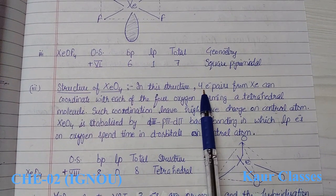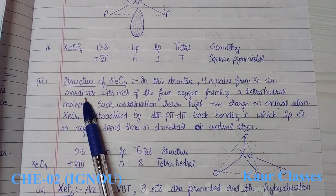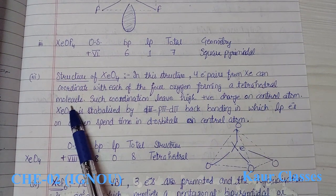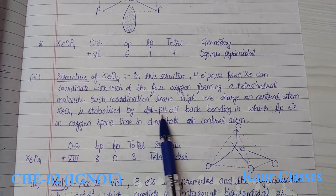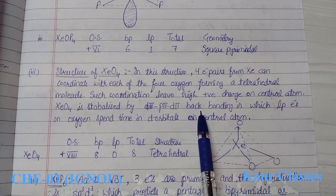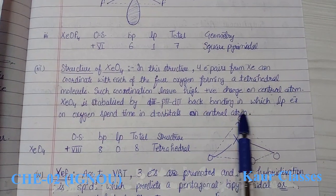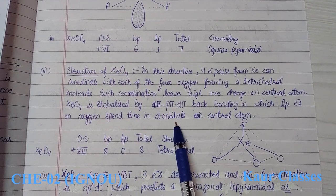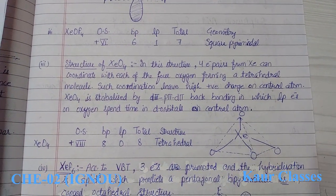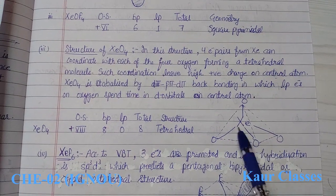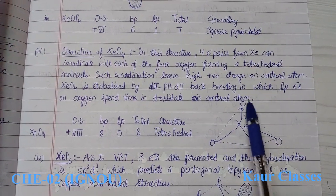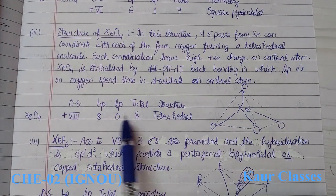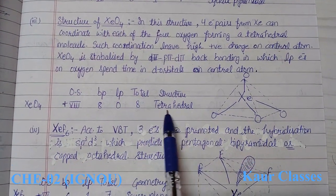The next structure is xenon tetraoxide (XeO4). Four electron pairs from xenon coordinate with each of four oxygen atoms, forming a tetrahedral compound. Dπ-pπ back-bonding exists, in which lone pair electrons on oxygen spend time in d orbitals on xenon. With four double bond pairs, the geometry is tetrahedral.